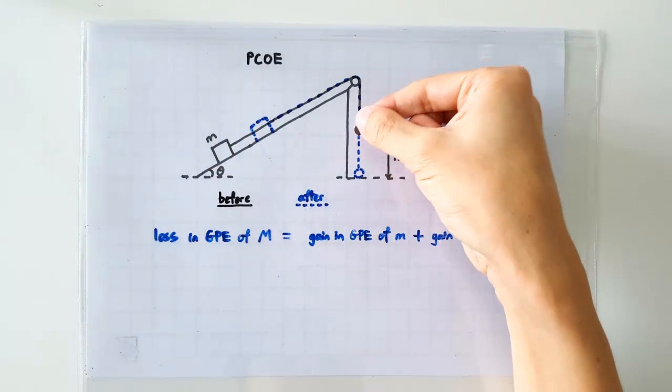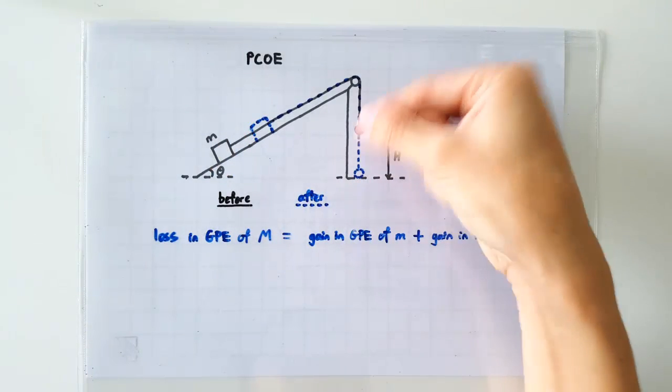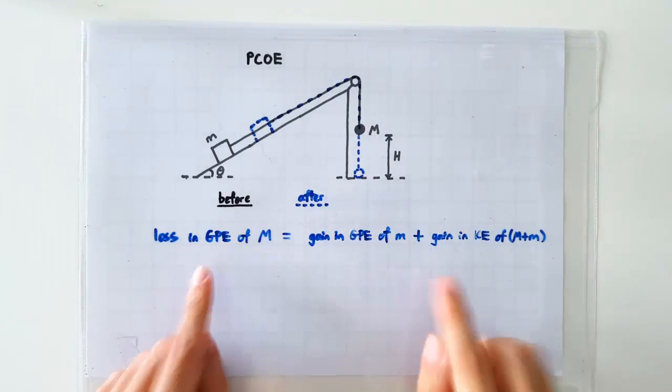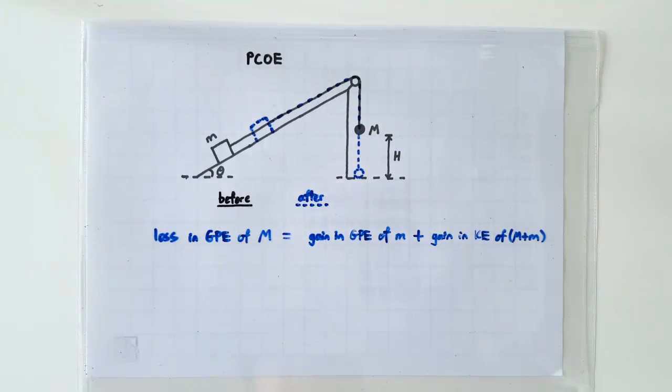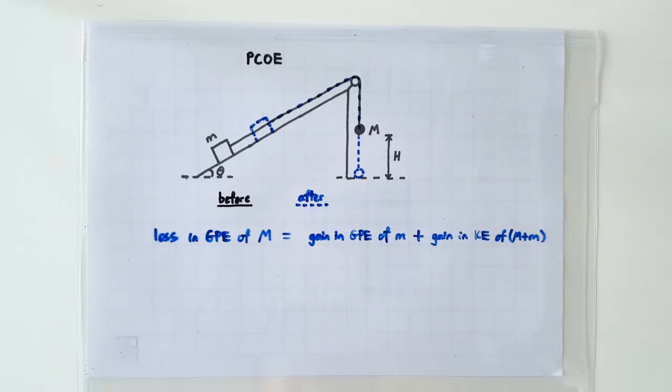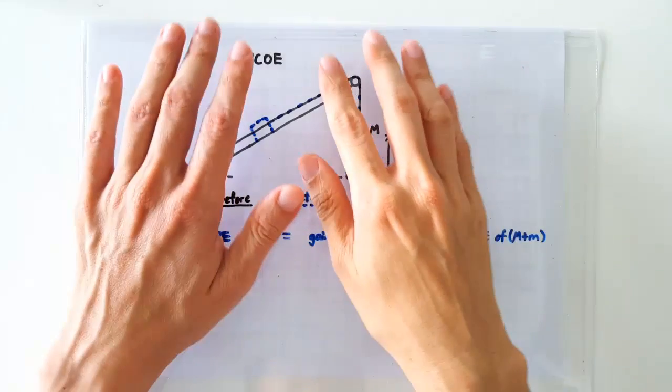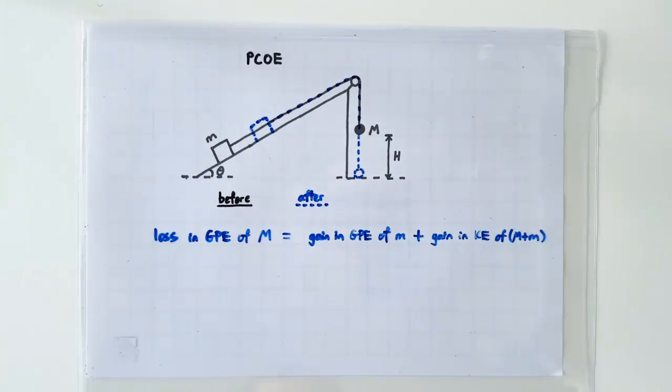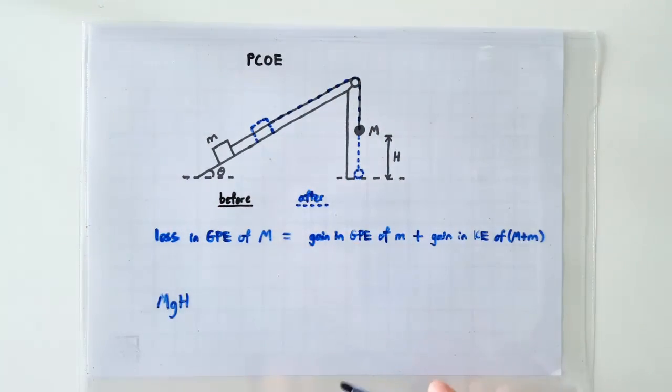If between this instance and this instance, somebody came along and gave this lead ball an extra pull downwards, then this equation will not be valid anymore. Because that extra pull results in a work done by external force, which would have increased the total energy in this system.